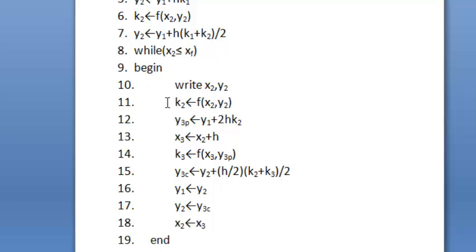Begin our loop. We write x2 and y2. Then we again assign the value of f x2 comma y2 in k2. Then here we find the predicted value of y3 which equals y1 plus 2h k2.